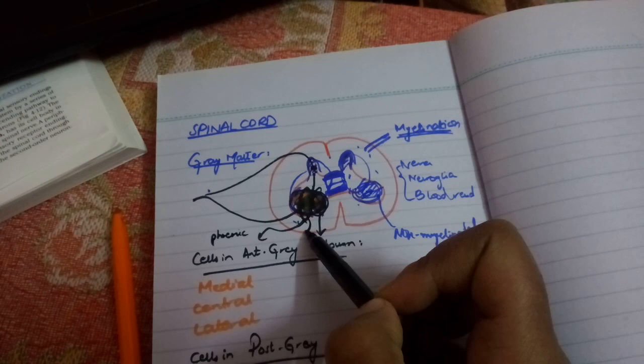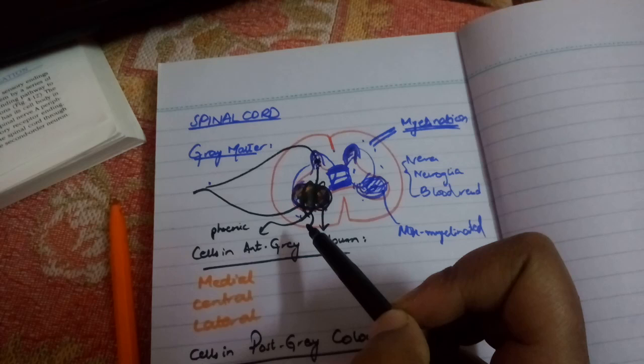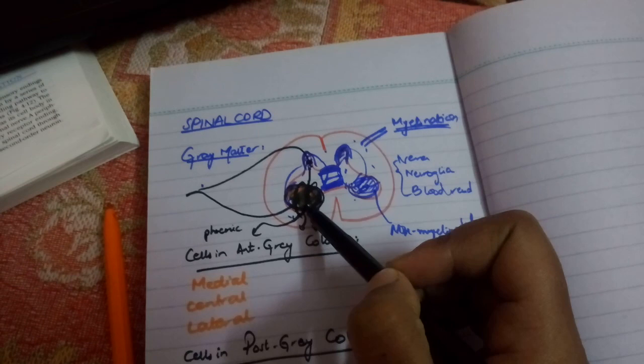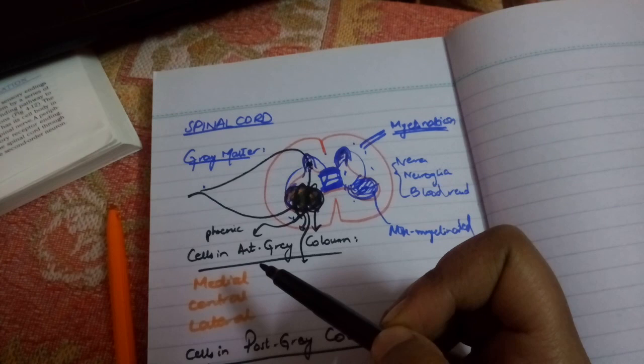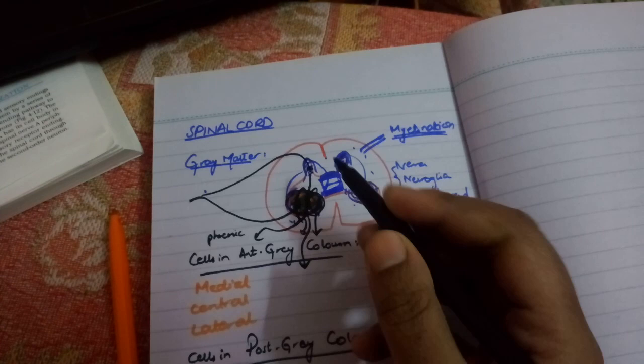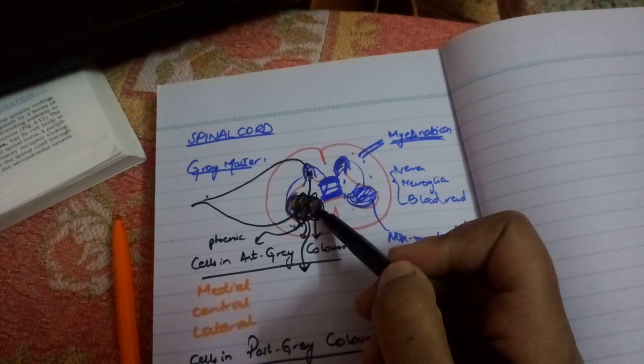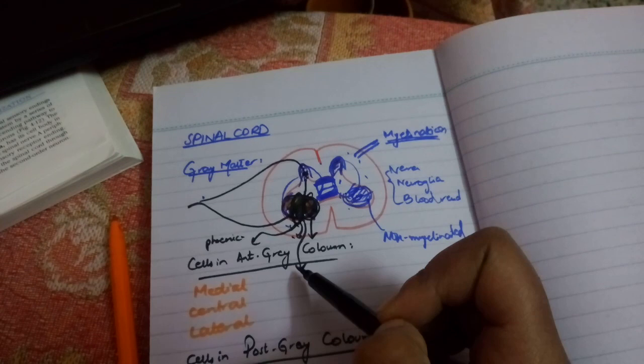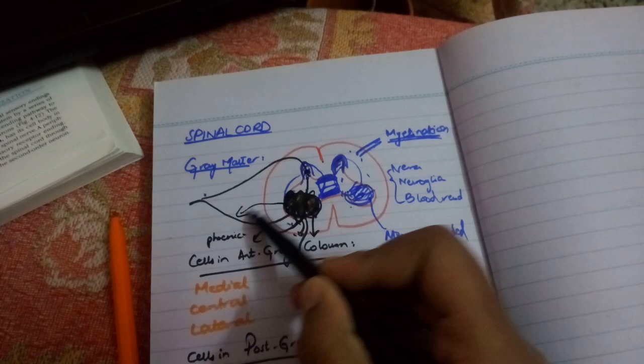The central group is called the accessory area. The lateral group is present in the lumbosacral area and provides innervation to the lower limb. So to summarize: the medial group supplies the trunk, head, and neck; the central group supplies the diaphragm, sternocleidomastoid, trapezius, and the lumbosacral region; and the lateral group supplies the upper and lower limbs. That is the anterior column classified.